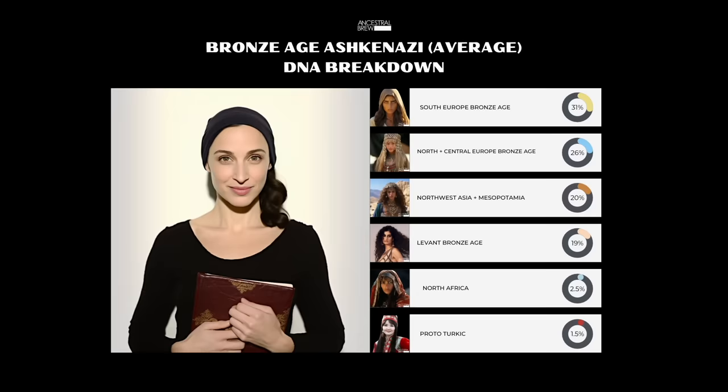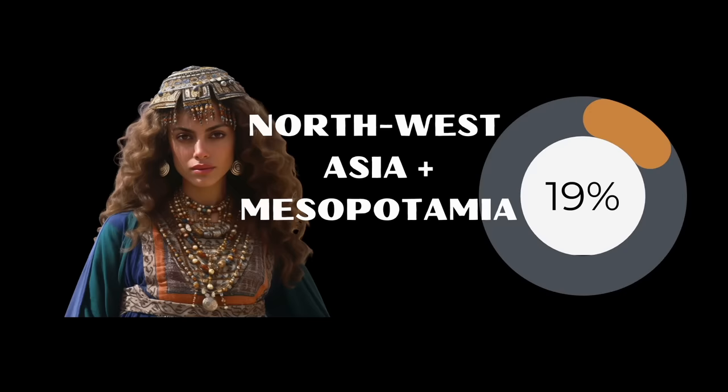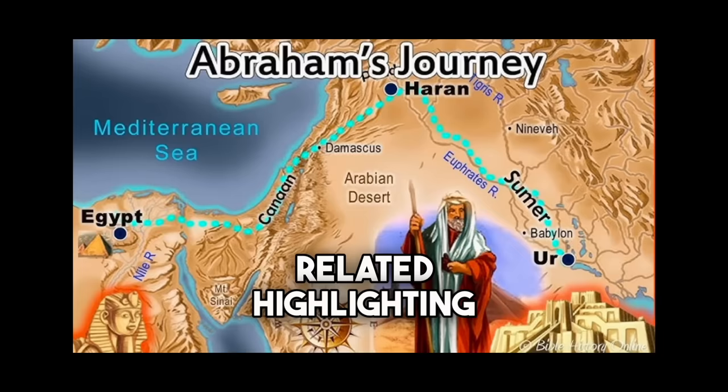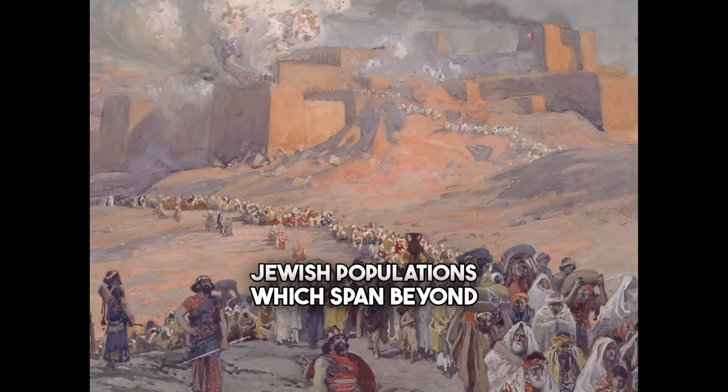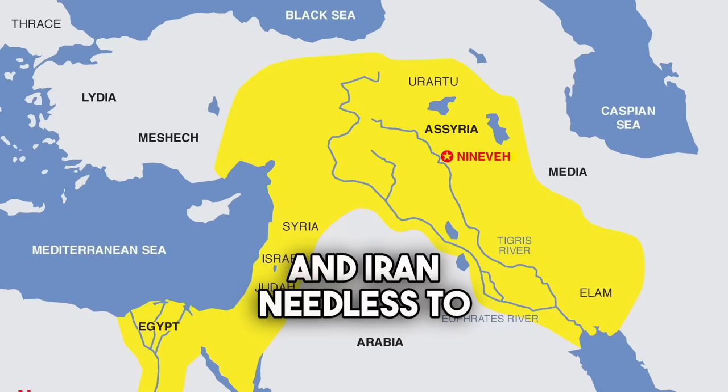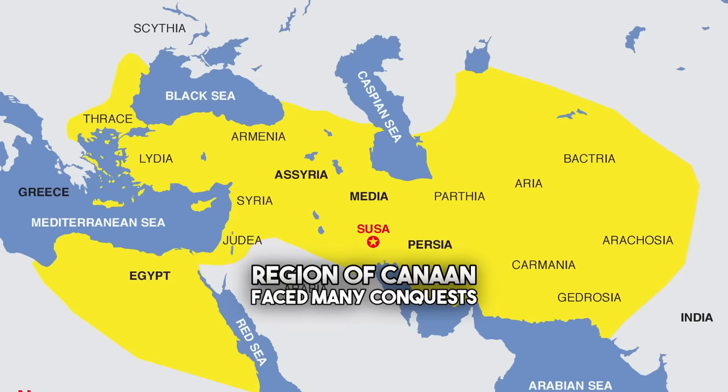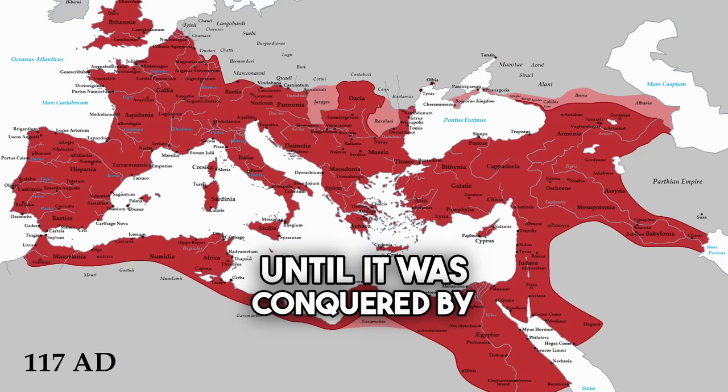In addition to Levantine ancestry, around 20% of their ancestry on average is Northwest Asian and Mesopotamian related, highlighting the diverse ancestry of Jewish populations, which span beyond the ancient Canaanites to groups in Mesopotamia and Iran. The historical region of Canaan faced many conquests until it was conquered by the Romans in the first century.